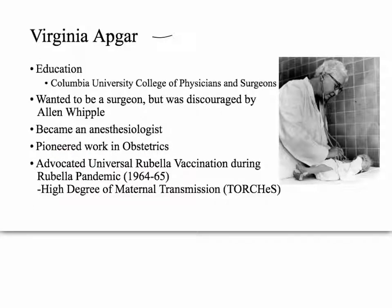She pioneered work in obstetrics and was an advocate for universal rubella vaccination during the pandemic in the 1960s. The reason for that is she studied teratogens — she was a leading researcher in teratogenic agents that act on newborns, and rubella is one of those.